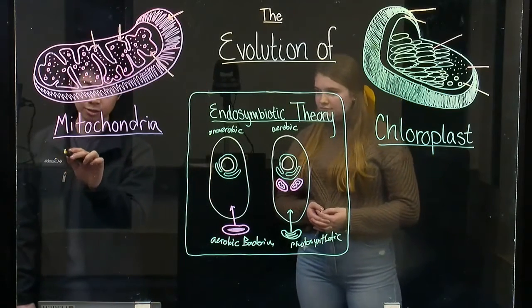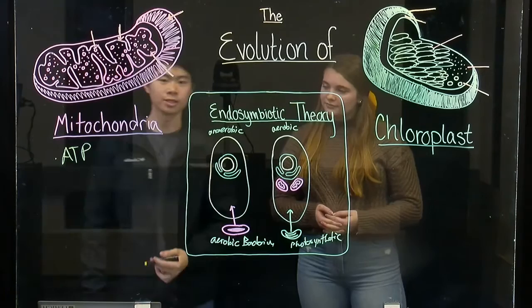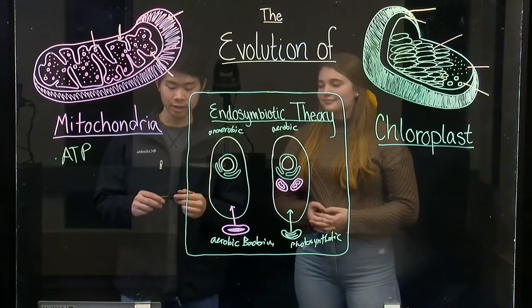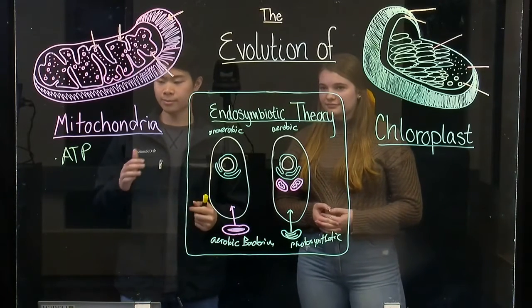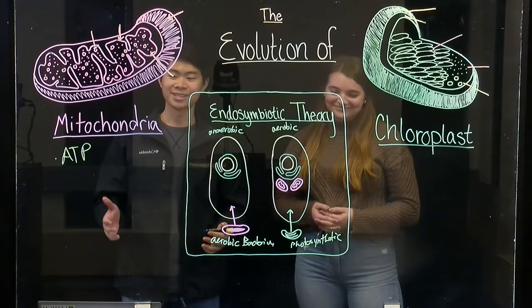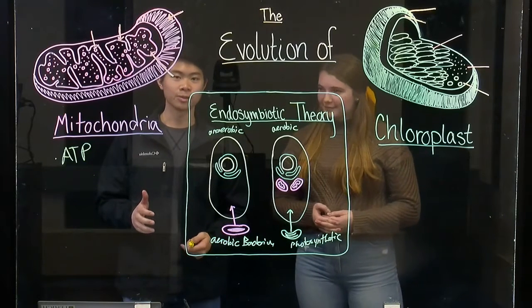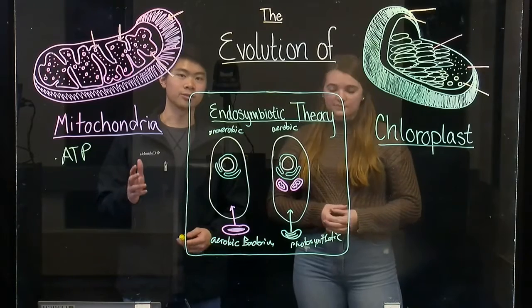The function of the mitochondria is to produce ATP, which makes it the powerhouse of the cell. It does this by harnessing energy from oxidized food molecules such as glucose and converting it into usable forms of energy for cellular processes around the cell.